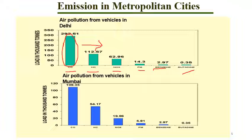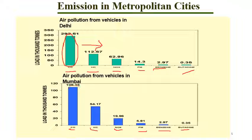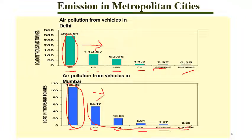Similarly, looking at air pollution from vehicles in the city of Mumbai, again carbon monoxide, hydrocarbons, NOx, solid particulate matter, benzene, and butadiene have been found as the major air pollutants. The proportion of carbon monoxide is the highest compared to other air pollutants. Comparing all of them, carbon monoxide's contribution to vehicular air pollution in Mumbai is the greatest.